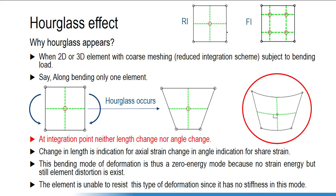Only for first order elements with a reduced integration scheme do we get the hourglassing problem. For first order full integration scheme we have another problem known as shear locking, which we will discuss also. If the element is subject to bending load, ideally this should happen: this edge should be compressed and this edge should be in tension, and the angle between the horizontal and vertical laminas should remain 90 degrees — meaning no shearing, just bending.